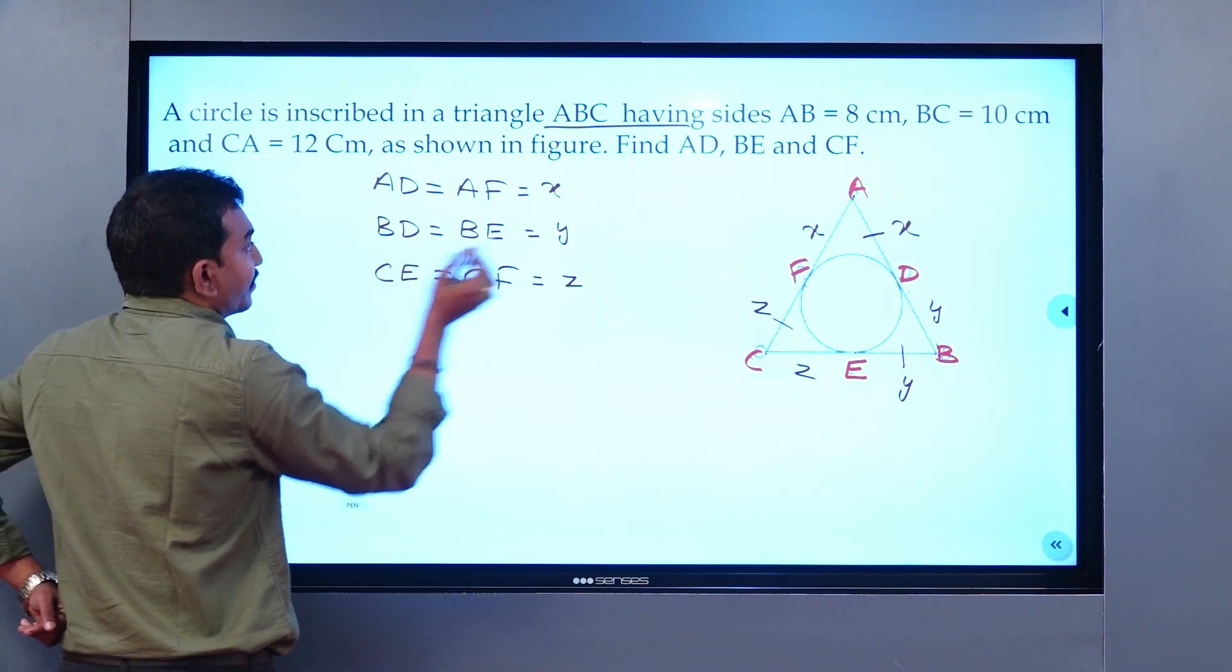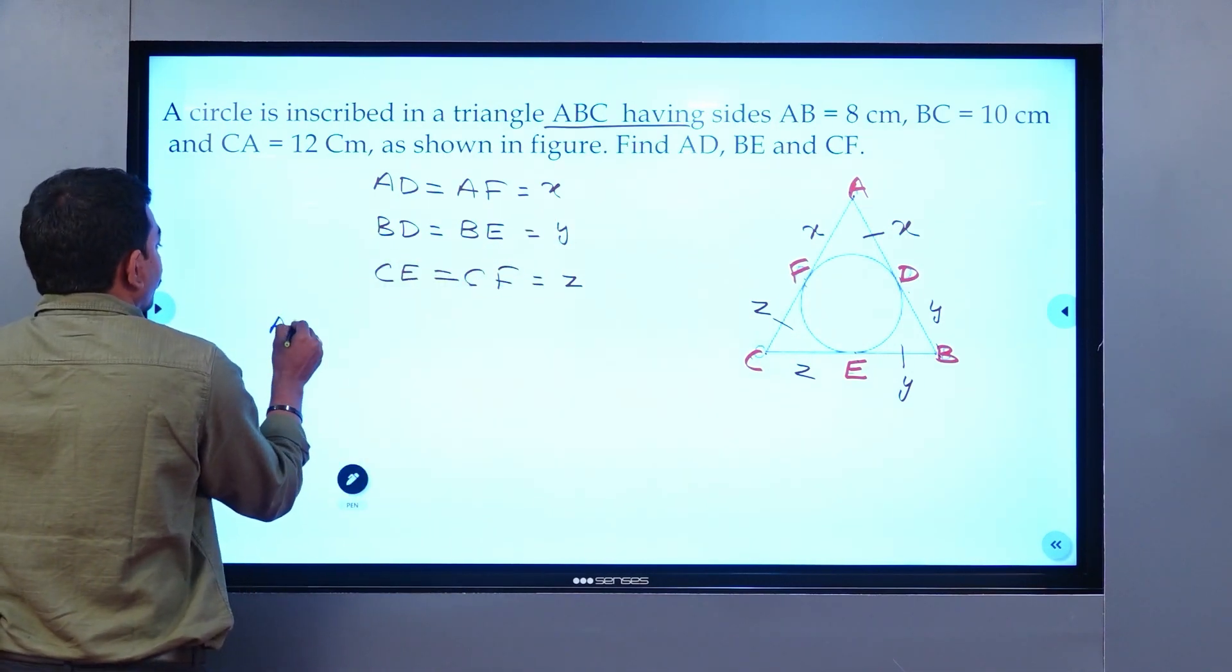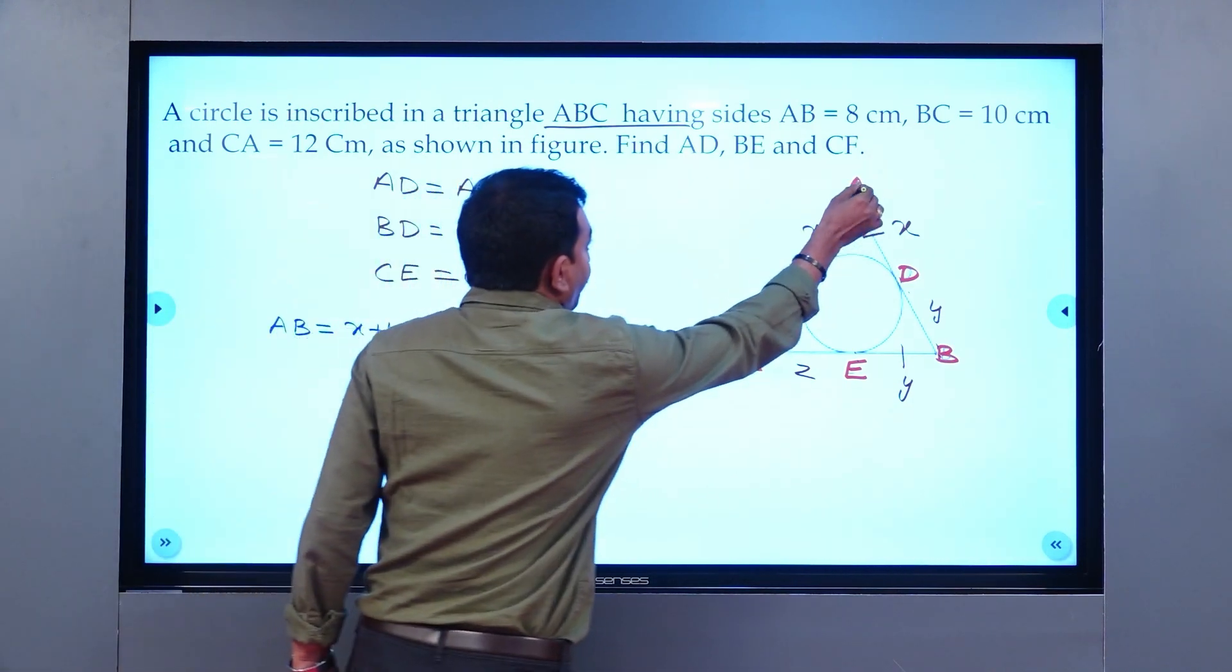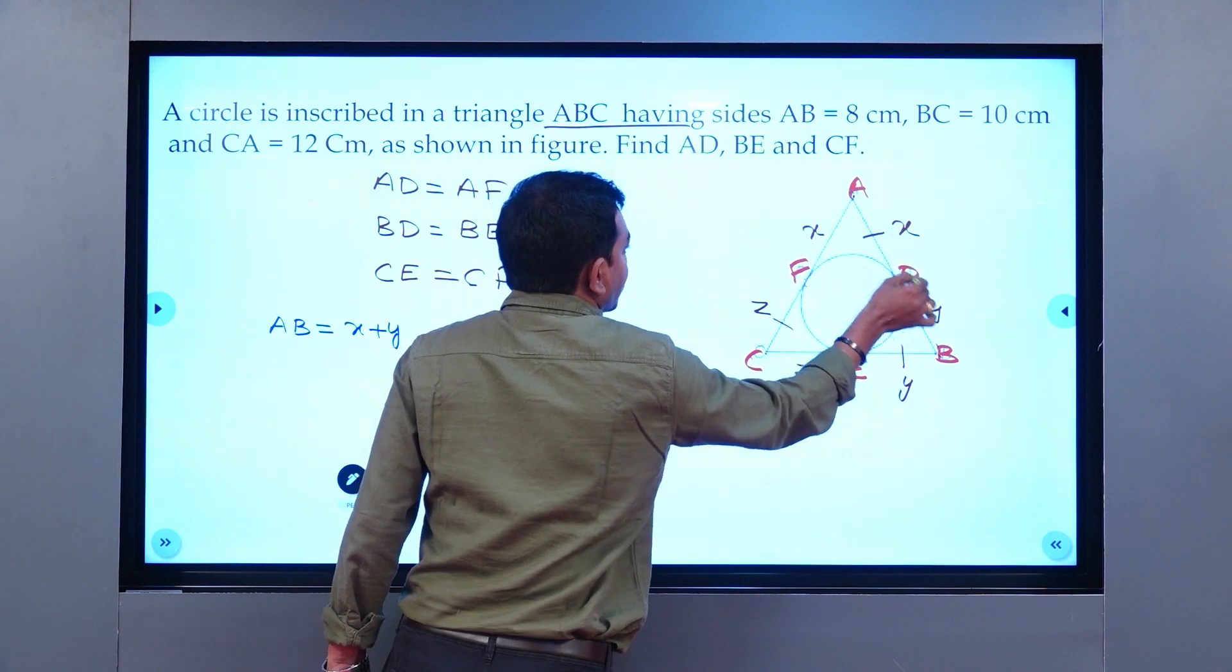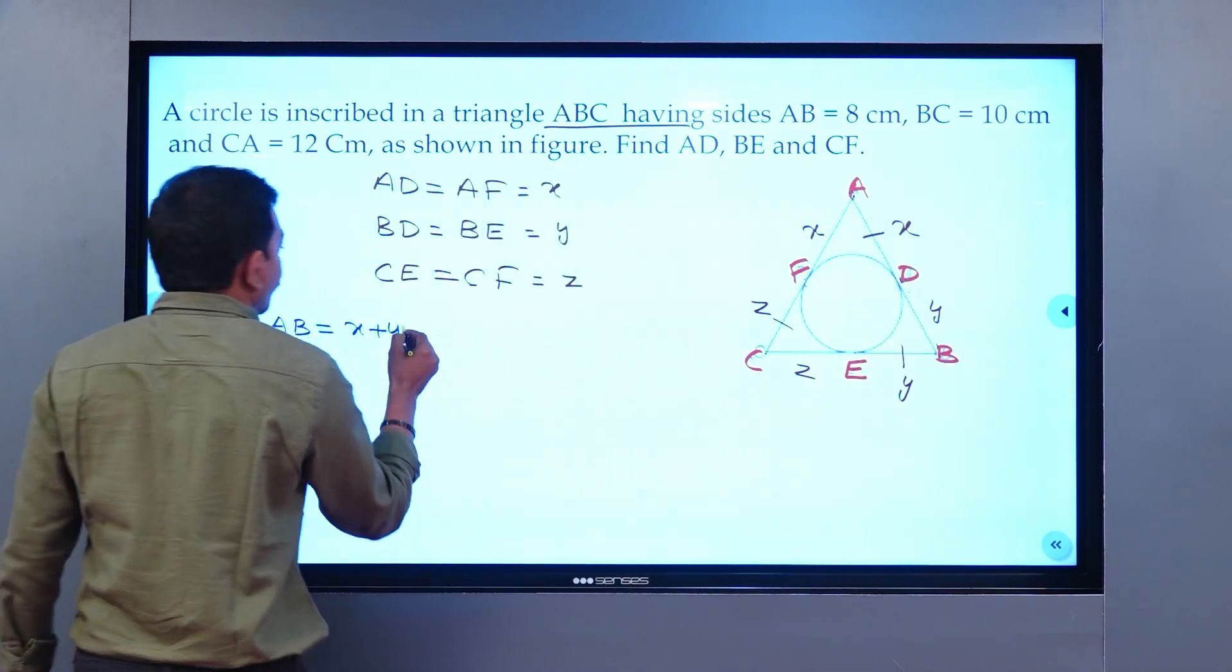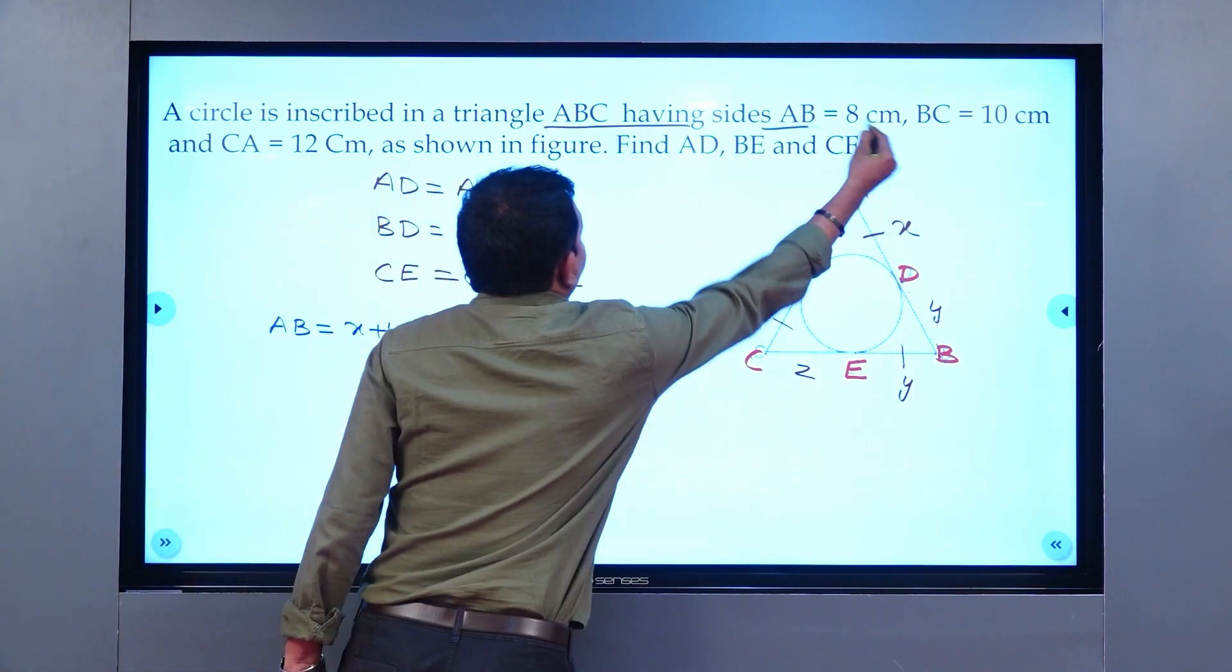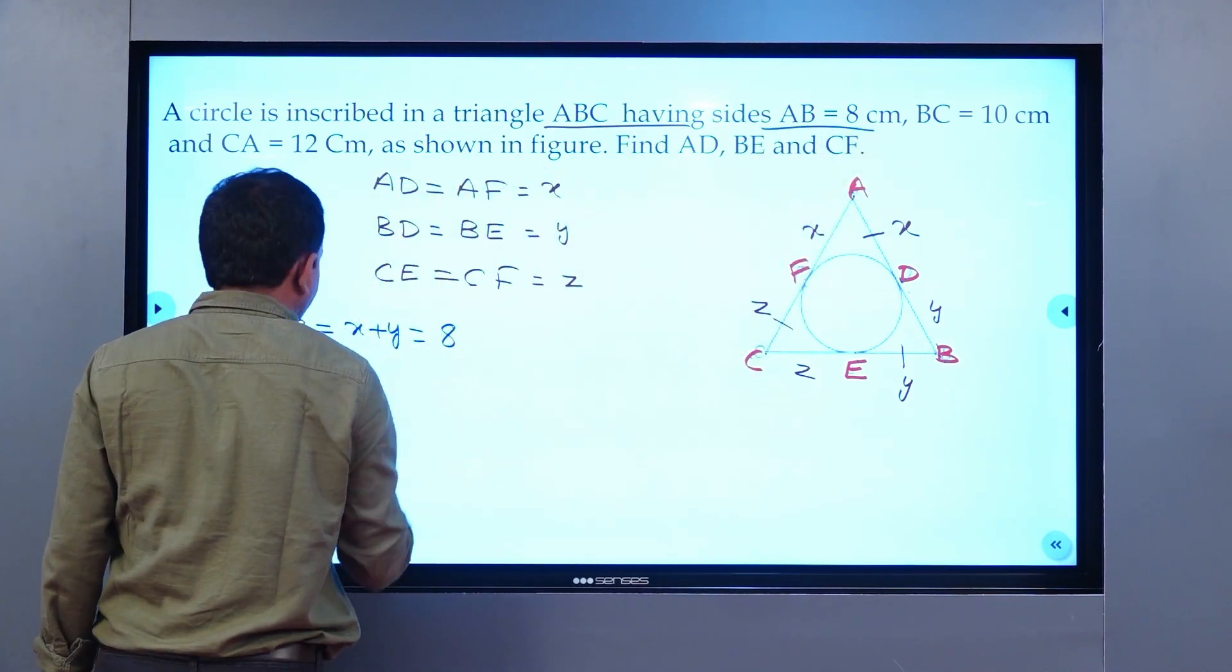When I take the length of AB, AB is equal to X plus Y. The length AB is AD plus BD, which is X plus Y, which is 8. So X plus Y equals 8.